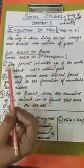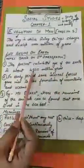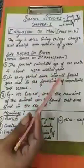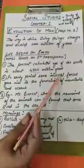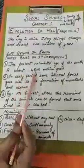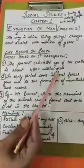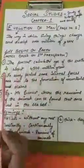Number 1: The present calculated age of the Earth is about 4,500 million years. So what is the age of the Earth? It is about 4,500 million years.